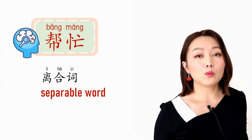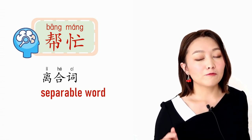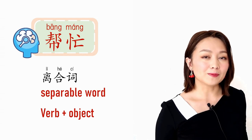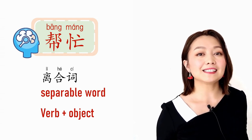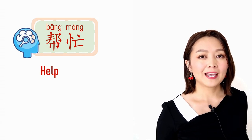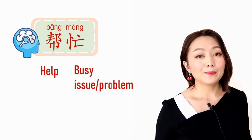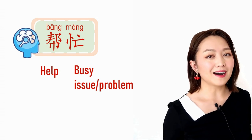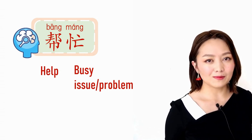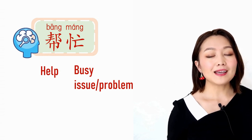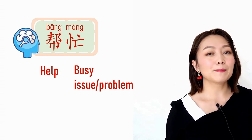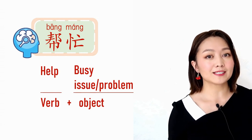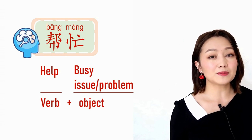帮忙 is a separable word — more specifically, it's a verb-object construction. This word is made up by two parts: one part is a verb, another part is an object. 帮 is the verb meaning 'help,' and 忙 is the object. 忙 literally means 'busy,' but here we can understand it like an issue or a problem. So 帮忙 is like saying 'help with an issue.' That's why it's not a transitive word — since 忙 is already the object of 帮, you cannot put another object after it. If you say 我帮忙你, that doesn't make sense.